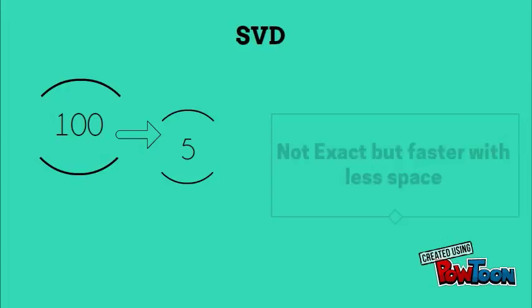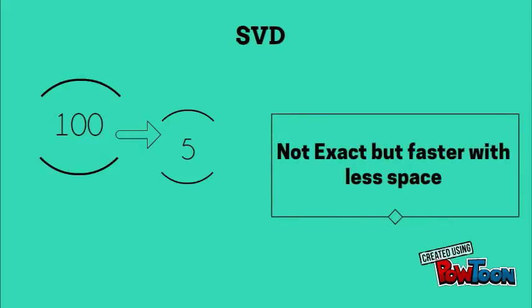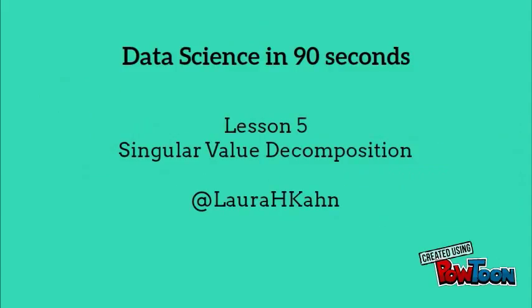SVD is not exact, but it's a way to process data with less space and faster. We use SVD to predict with some degree of certainty whether a person will eat or will not eat a fruit in the future. I hope you've enjoyed today's lesson on Singular Value Decomposition unsupervised machine learning. Join me again for another lesson on Data Science in 90 Seconds.